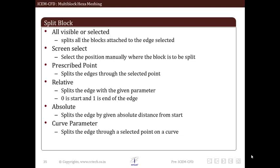Now let us see how to split block. There are different ways in which blocks could be split as per requirement. Split block option allows us to split blocking at selected edge. There are various methods to split blocks such as all visible split, screen select, Prescribed Point, Relative, Absolute and Curve parameter. All visible splits all blocks attached to selected edge. Selected option splits only selected blocks. We can select edge from the screen by left clicking on edge and move on the screen to adjust location and then middle click completes the operation.